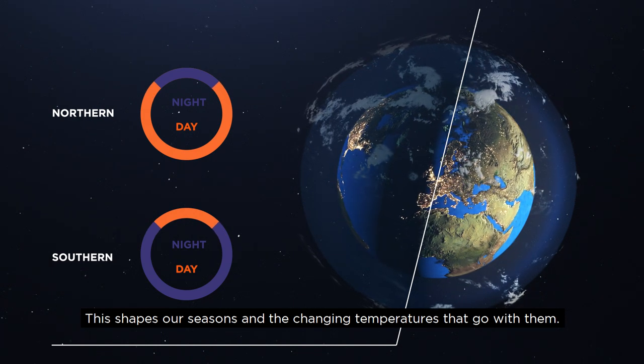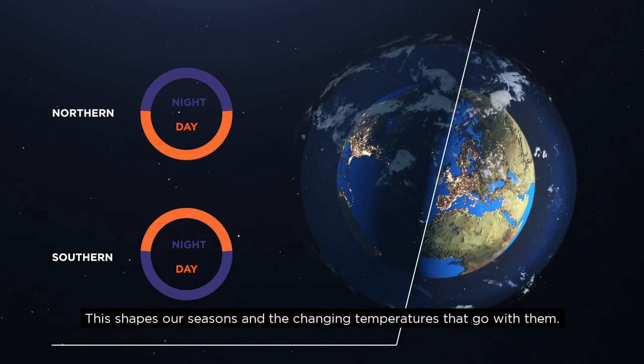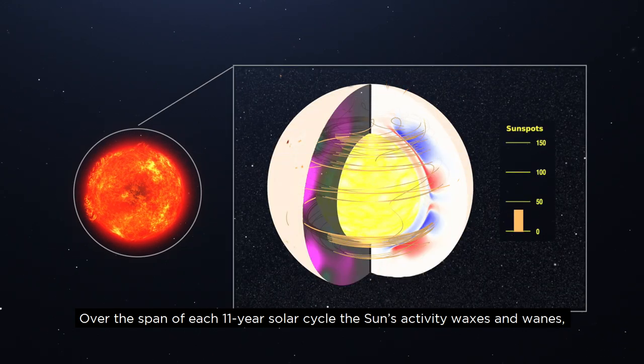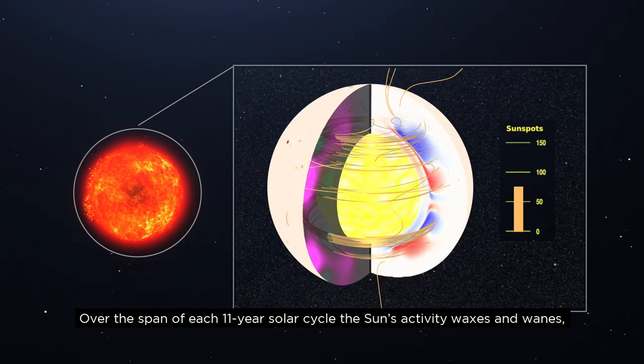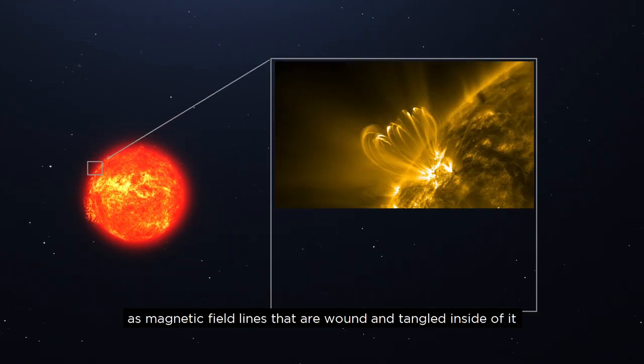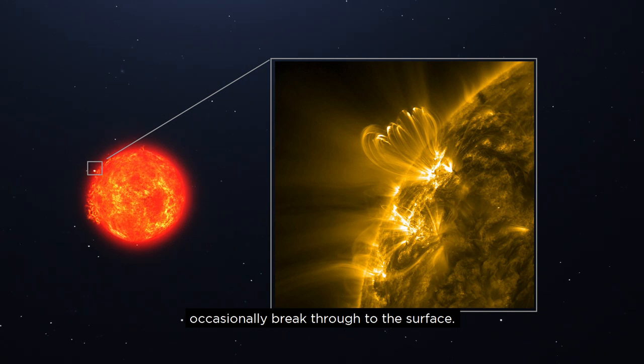This shapes our seasons and the changing temperatures that go with them. Over the span of each 11-year solar cycle, the Sun's activity waxes and wanes, as magnetic field lines that are wound and tangled inside of it occasionally break through to the surface.